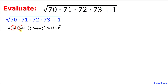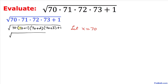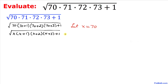We can see that 70 is common throughout, so let me substitute: let x equal to 70. Our radical then becomes simply the square root of x times (x+1) times (x+2) times (x+3), and then plus 1. Let me call this expression number 1.